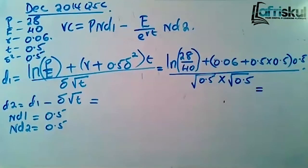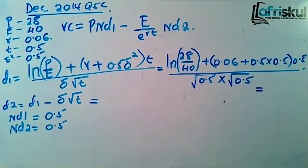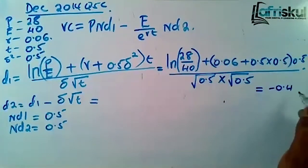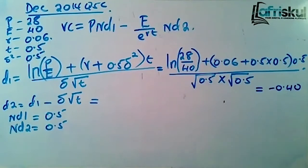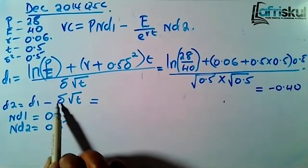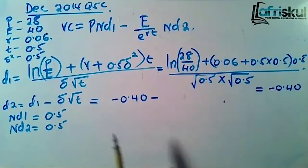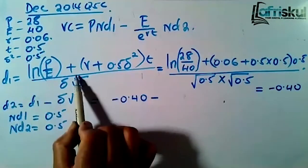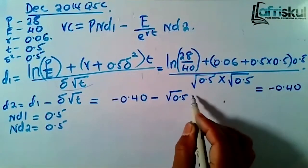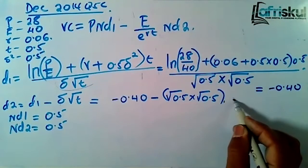The correct answer for d1 is negative 0.40. Remember, it should always be to two decimal places because we are reading from the normal distribution curve. Now let's go to d2. We said d2 equals d1 minus the standard deviation times square root of T, which is the denominator of d1. So you take d1, which is negative 0.40, and deduct the standard deviation term.